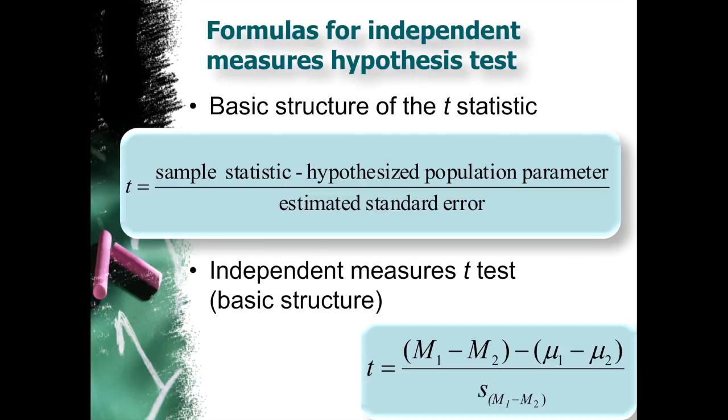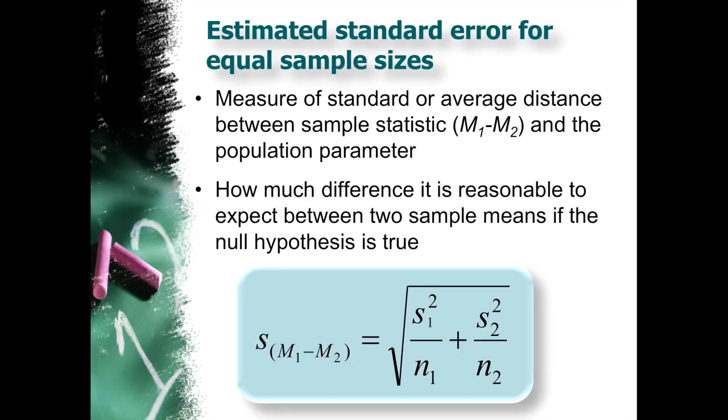Okay, so the independent t equation is mean 1 minus mean 2 minus mu1 minus mu2, divided by this estimated standard error for both of those means. So to get the estimated standard error, you have to take the square root of the variance for the sample for the first group, divided by the sample size for that first group, plus the variance for the second group, divided by the sample size for that second group. And what you're trying to do is you're trying to find out how much difference is it reasonable to expect between these two sample means if the null hypothesis is in fact true.